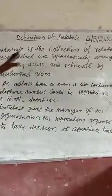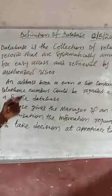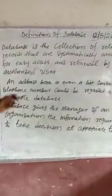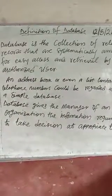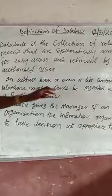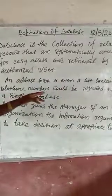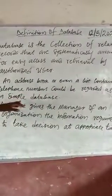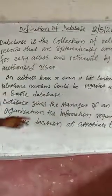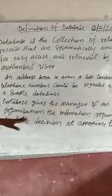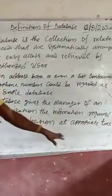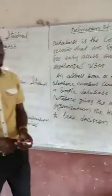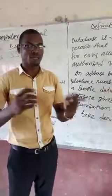Definition of database. Database is a collection of related records that are systematically arranged for easy access and retrieval by authorized users. An address book or even a list containing telephone numbers could be regarded as a simple database. Database gives the manager of an organization the information required to take decisions at the appropriate time. When we talk about database, we are talking about the collection of related records.